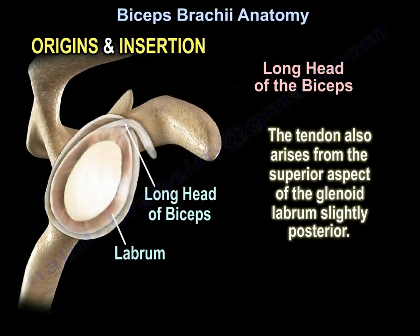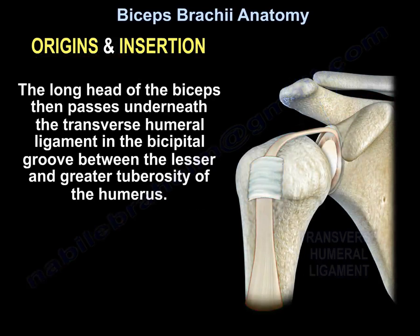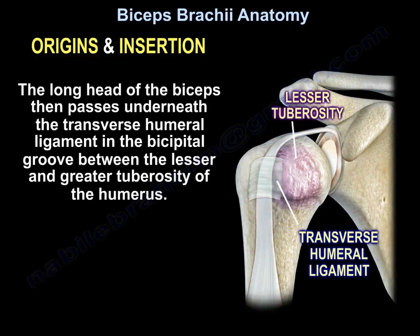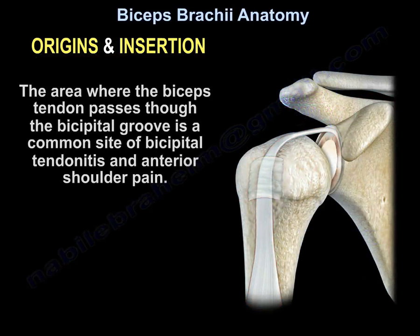The tendon also arises from the superior aspect of the glenoid labrum slightly posterior. The long head of the biceps then passes underneath the transverse humeral ligament in the bicipital groove, between the lesser and the greater tuberosity of the humerus. The area where the biceps tendon passes through the bicipital groove is a common site of bicipital tendonitis and anterior shoulder pain.